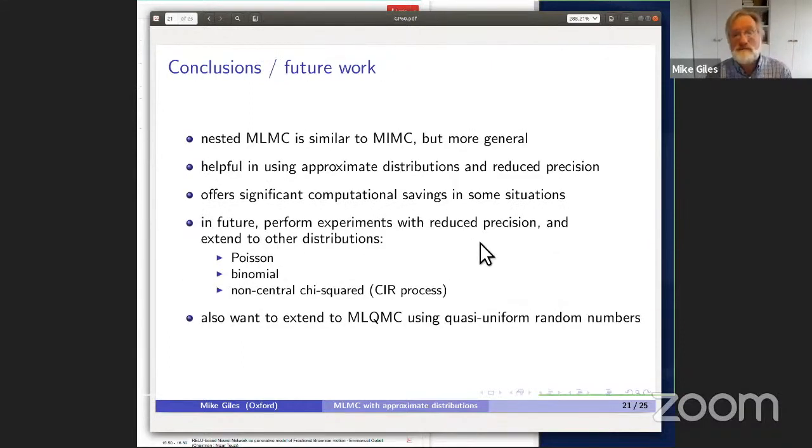In this work we've used nested multilevel. It's similar to multi-index Monte Carlo, but it's more general. I can explain more about that if anyone would like me to in the questions. This nested multilevel setup, I think it works very nicely in bringing in this ability to use approximate distributions to get additional computational savings and reduced precision arithmetic. I think in some situations this can be beneficial.